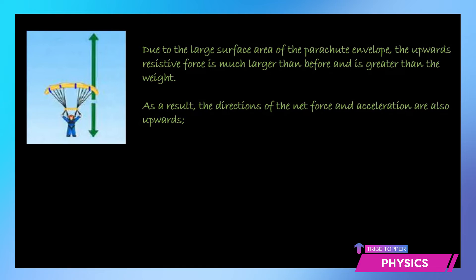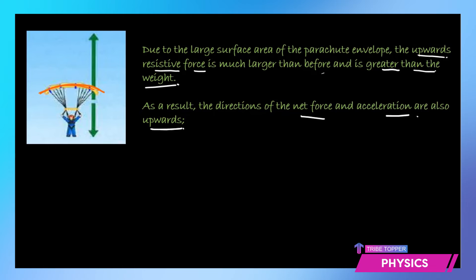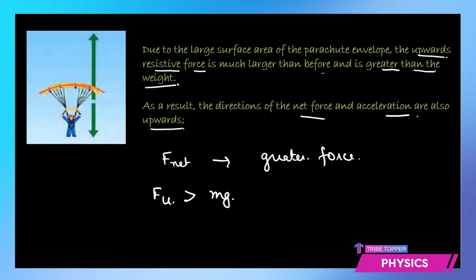Now the skydiver opens the parachute. The moment he opens it, due to the large surface area, the air drag becomes very very high. The upward air resistance or resistive force becomes much larger than it was before opening the parachute — in fact it is so large that it is even greater than the weight.